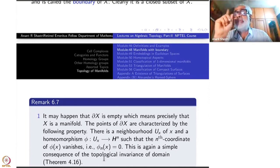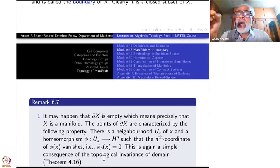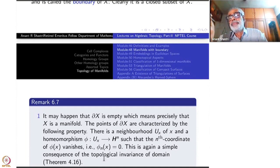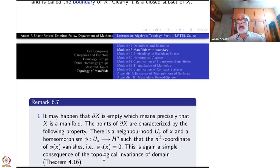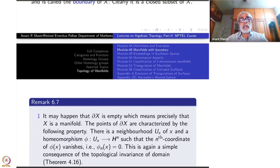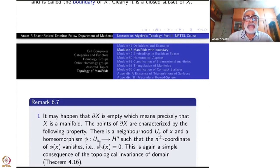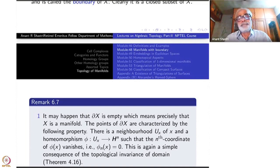Namely, if under chart phi_1 the nth coordinate is zero, and under phi_2 the nth coordinate is not zero for the same x, this cannot happen. When you take phi_1 inverse composed with phi_2, you would get an open set inside H^n that is not open in R^n mapping to an open subset of R^n. That would contradict invariance of domain: if two subsets of R^n are homeomorphic and one is open, the other must also be open.